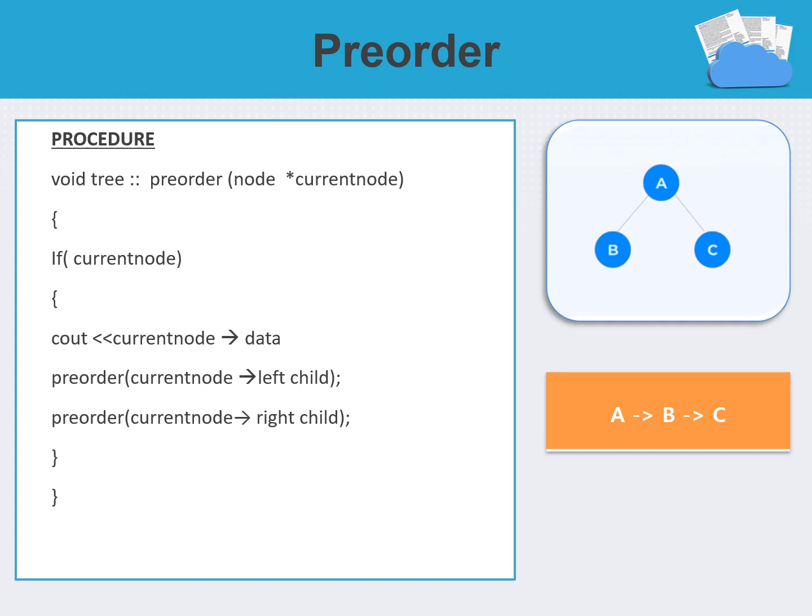This is the procedure for pre-order tree traversal. We start with the root node — the current node. We check if the current node is not null, meaning it is a valid node. If valid, we print the data stored in the current node — this is where we visit the current node. Then we recursively call pre-order on the left child, and after that, recursively call pre-order on the right child. This recursive process continues until we reach the end of the tree or a leaf node, exploring the entire tree starting from the root, then moving to the left and right children recursively.